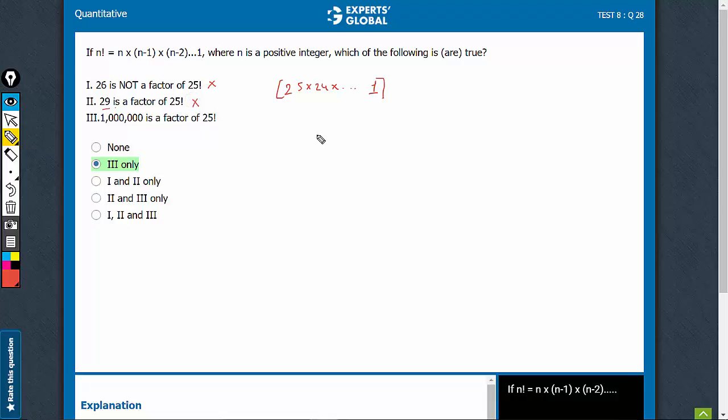Look at the last one. This is 1 million, 10 raised to power 6. Don't take it as 10 raised to power 6, take it as 2 raised to power 6 into 5 raised to power 6.